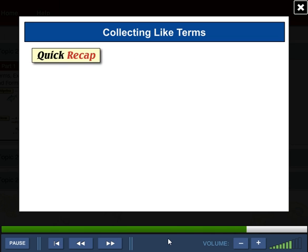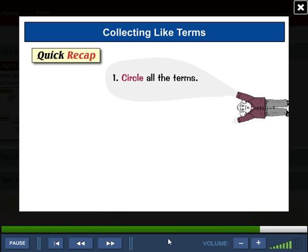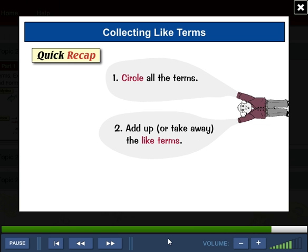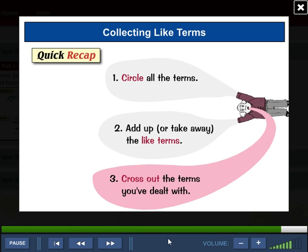So, a quick recap. And to help us, we have Teddy Tips. OK, first job is to circle all the terms. And make sure you include the plus or minus sign in front of each term. Then add up or take away the like terms. And also, remember to cross out the terms you've dealt with.